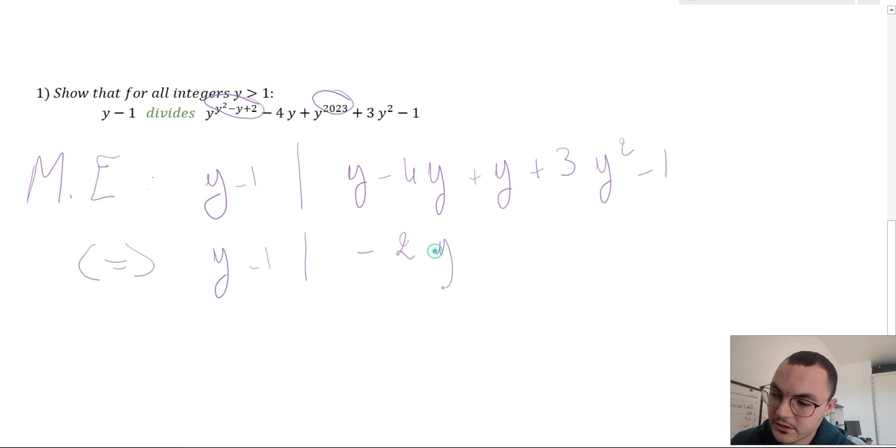Which is equivalent to say that -2y plus 3y² minus one is congruent to zero mod y minus one. The initial easier version question becomes the following.